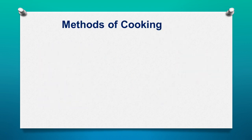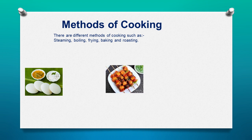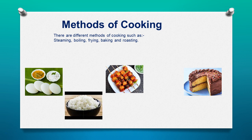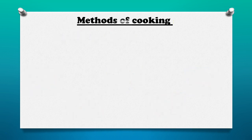Now let us see what are the different methods of cooking. The different methods of cooking are steaming, boiling, frying, baking, and roasting. Now let us see these different methods of cooking in detail.